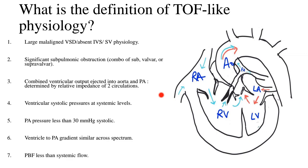The ventricle-to-PA gradient is similar across the spectrum and remains nearly constant. For example, if the aortic systolic pressure is 120 mmHg, the RV and LV systolic pressures are also 120, and if the pulmonary arterial pressure is 20 mmHg, the gradient across the RV and pulmonary artery is 120 minus 20, which is 100 mmHg — and this gradient remains constant. Pulmonary blood flow (PBF) is less than systemic flow because the pulmonary artery has significant obstruction with a constant gradient, so flow across the pulmonary artery is less than flow across the aortic valve.